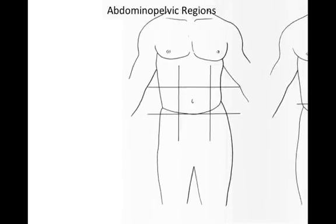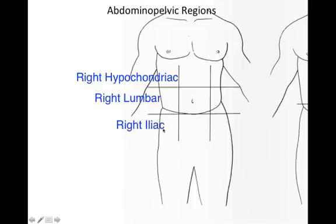First we'll start with the nine abdominal pelvic regions. Starting up here is the right hypochondriac. Here is the right lumbar and below that is the right iliac.